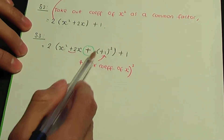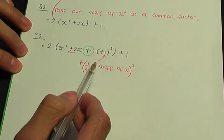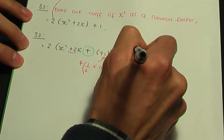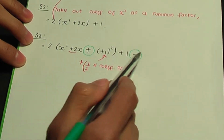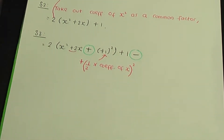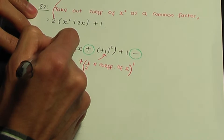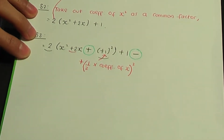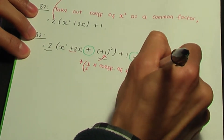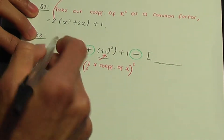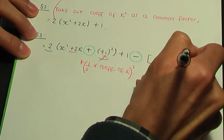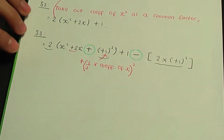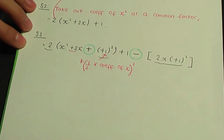We can't simply add something — we need to subtract something as well. So outside we always subtract, and we subtract whatever we've added. So we're adding 2 times plus 1 squared inside, and outside we need to subtract the same amount: minus 2 times plus 1 squared. That takes care of step number 3.